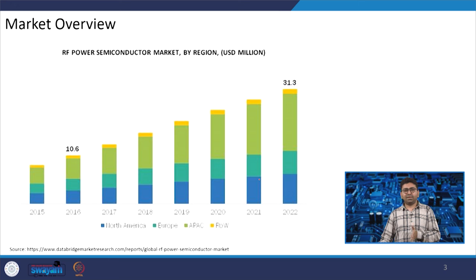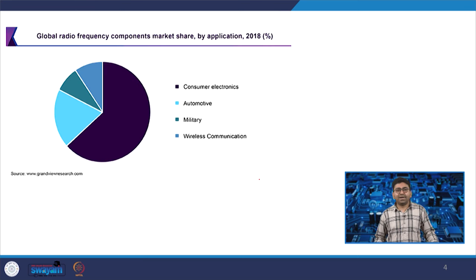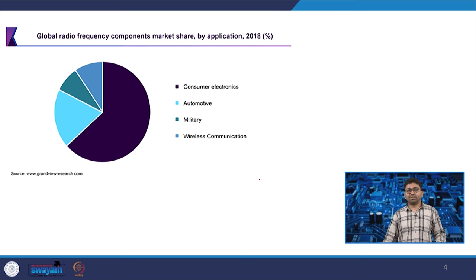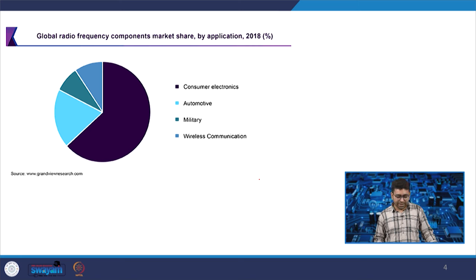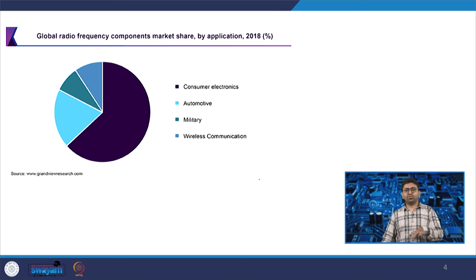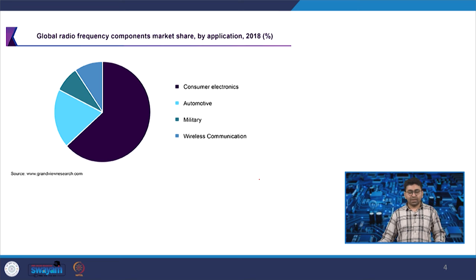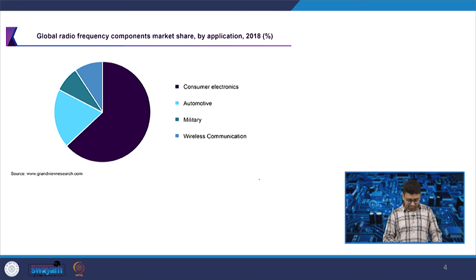From this graph we can see how the market will grow in 2022 and over the next 10 years. There is also a pie chart showing the various application segments governing the global radio frequency component market. Consumer electronics is dominating, followed by automotive, military, and wireless communication. This course will help us design RF transceivers for consumer electronics, and the knowledge can also be applied to automotive, military, and wireless communication.